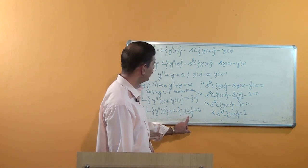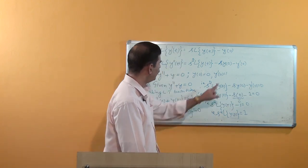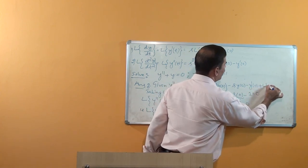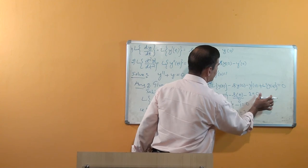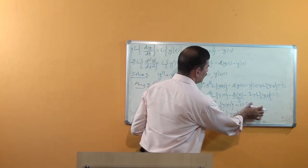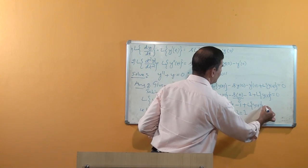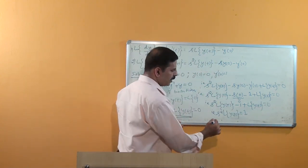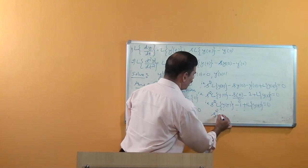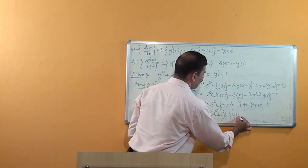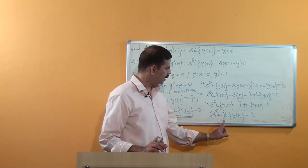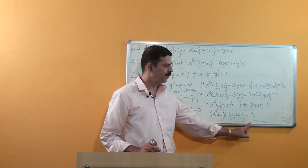Note the correction here: the term with Laplace of y(t) equals 0 was left out earlier. Rewriting and grouping: s² × Laplace of y(t) = 1, so Laplace of y(t) = 1/s². We will continue simplifying this in the next session. Thank you.